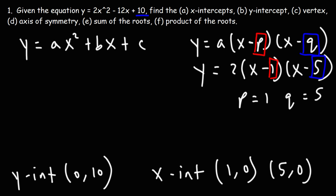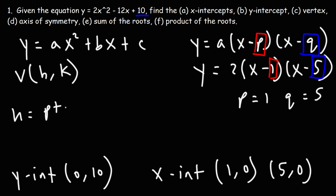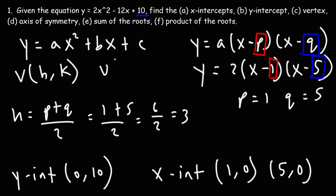These are x-values. In general, to find the x-intercept you set y equal to 0 and solve for x — that's for any equation. But for this quadratic in intercept form, finding your p and q values gives you the x-intercepts directly. Now let's determine the coordinates of the vertex. The vertex is written as (h, k), and h is the average of p and q, since the vertex is in the middle of the x-intercepts for a parabola. So 1 + 5 = 6, divided by 2 is 3 — the x-coordinate of the vertex is 3.